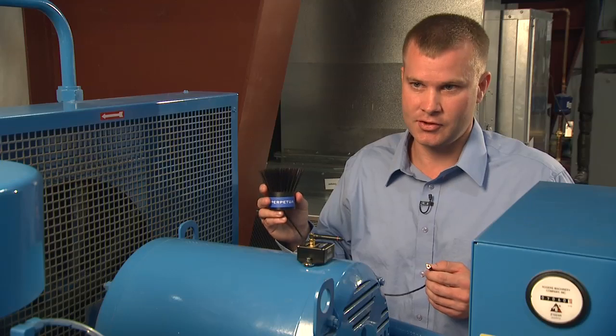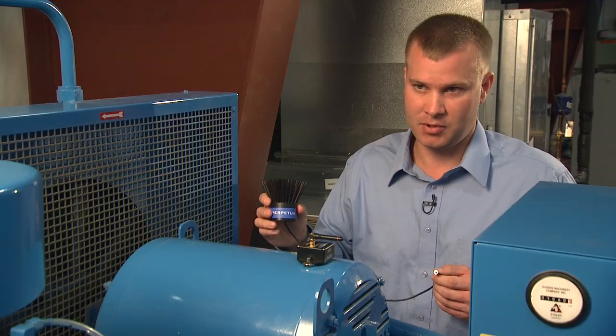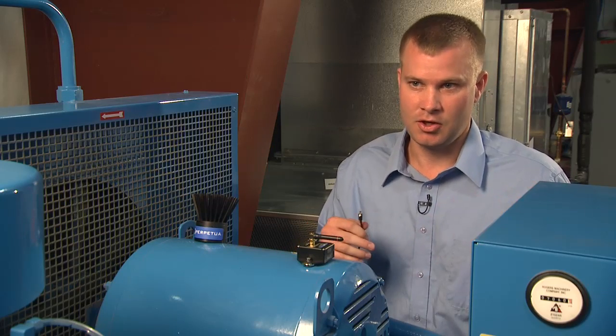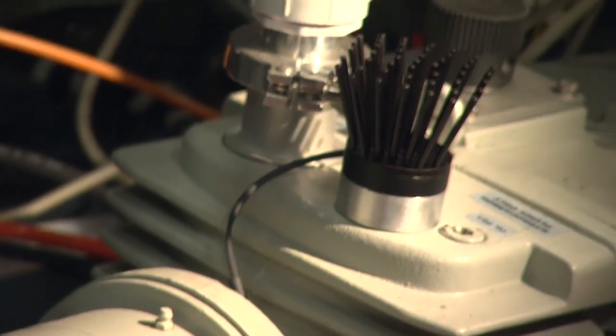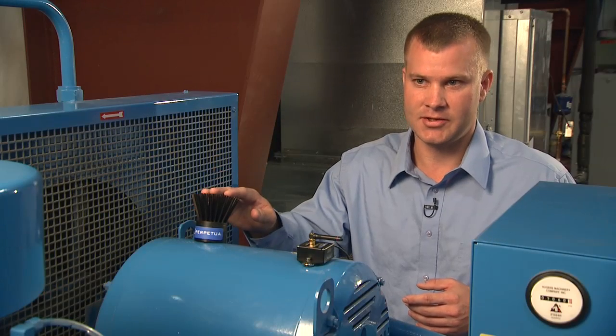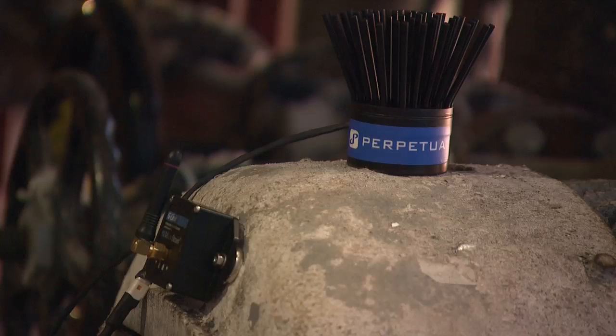The heart of these solutions is the Perpetua Power Puck, which generates renewable electricity whenever it's placed on a warm surface of a piece of equipment, a human body, or a wide variety of energy sources. Previously, this application had about a 3-month battery life. With the Perpetua Power Puck, it's over a 10-year system life.